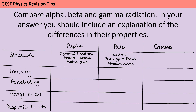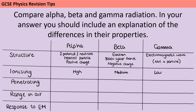Gamma radiation isn't a particle at all — it's an electromagnetic wave. You might even want to specify it doesn't have a mass and is not positively or negatively charged. In terms of ionising power, we have a sliding scale from an alpha particle, which is very highly ionising, down to gamma radiation, which is far less ionising.